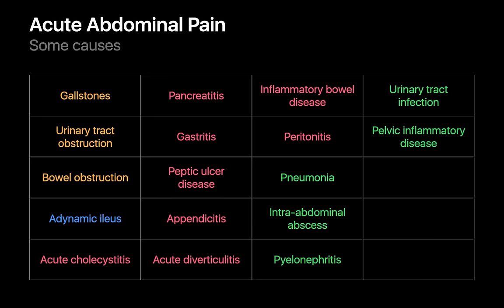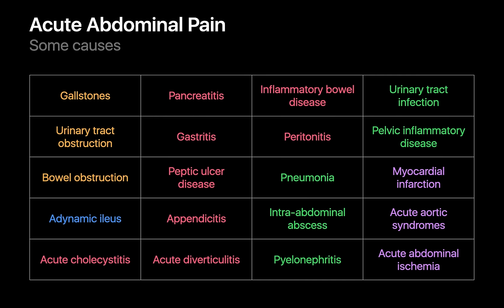Additional causes include inflammatory disorders such as basilar pneumonia, intra-abdominal abscesses, and pyelonephritis, and vascular disorders such as inferior wall MIs, acute aortic syndromes, and other intra-abdominal ischemic conditions.